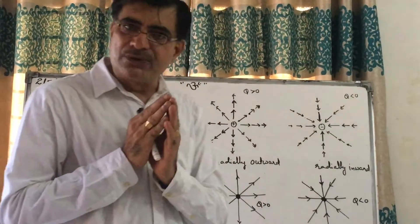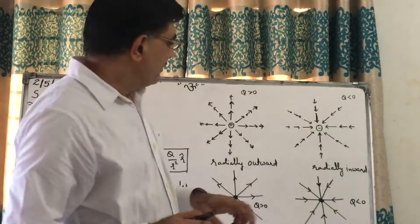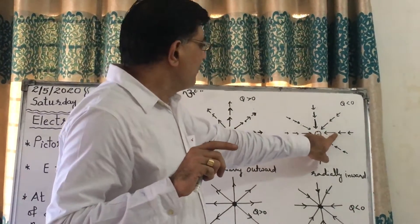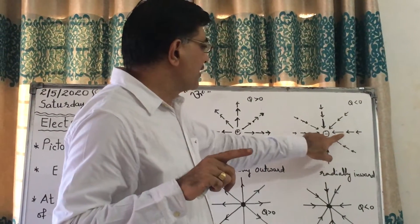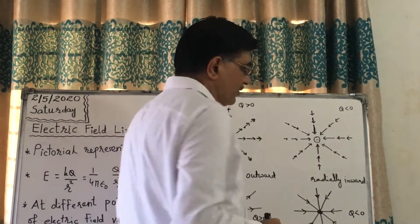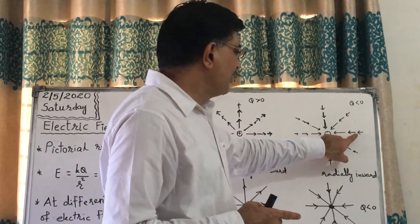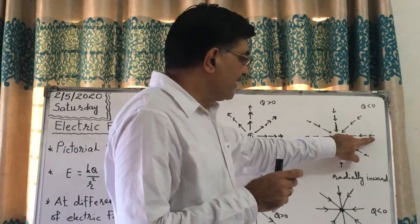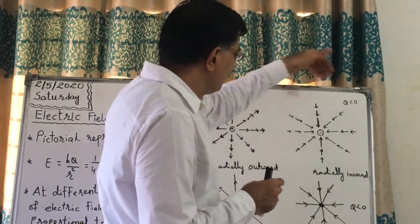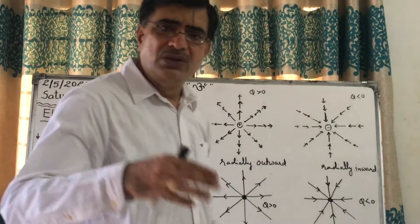For a negative charge — a point-like negative charge — I have to put a unit positive charge to find the electric field intensity at a point. If I put a unit positive charge there, this negative charge will attract it. So this is the vector representing electric field intensity at that point. If we go farther, it will become smaller and again smaller. But these are radially inward. At different points, the electric field intensity is inward and the length of the vector decreases as we go farther.